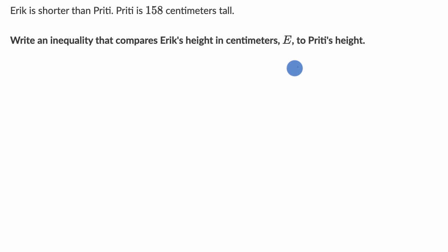Pause this video and see if you can do that. All right, so we have Eric's height, which we are using the variable capital E for. And how does it compare? It says Eric is shorter than Preeti. So Eric's height is going to be less than whatever Preeti's height is, which is 158 centimeters.